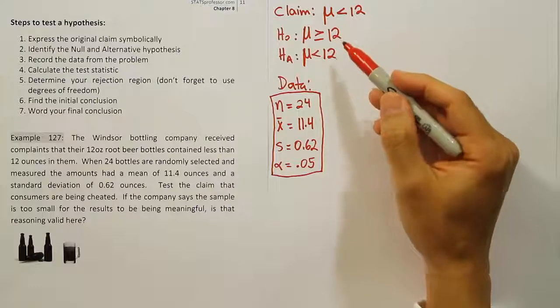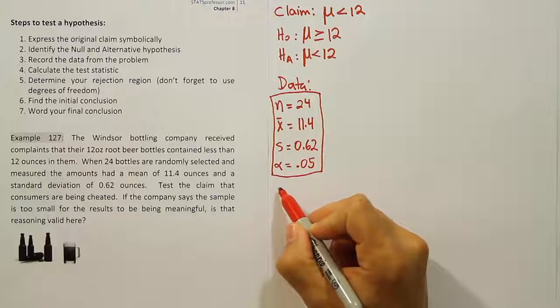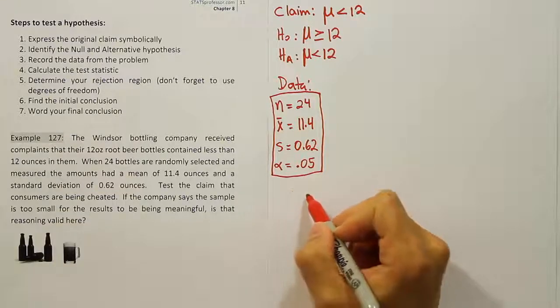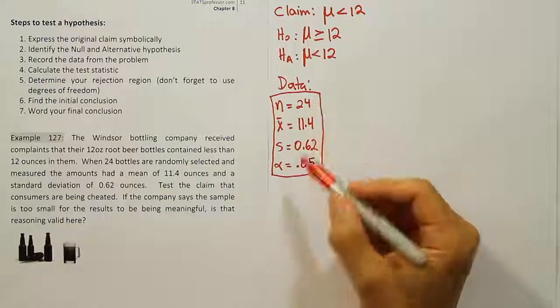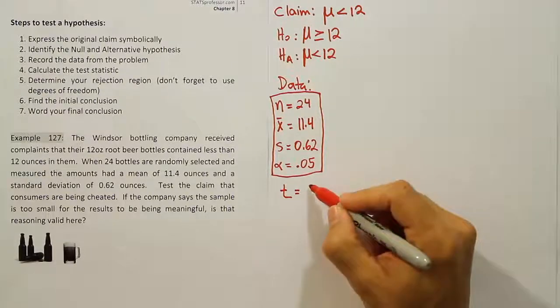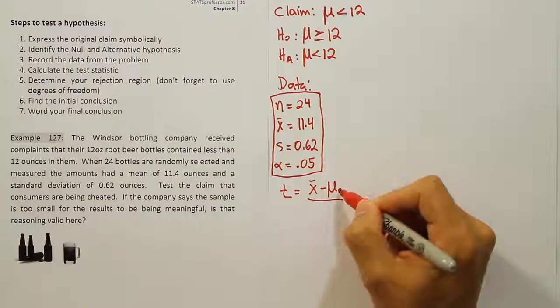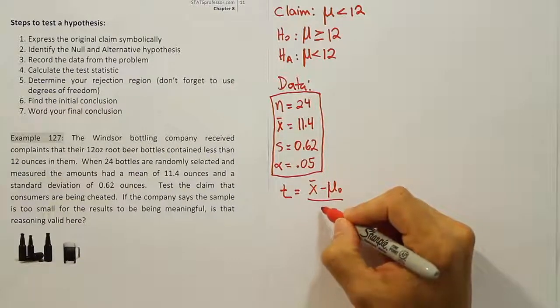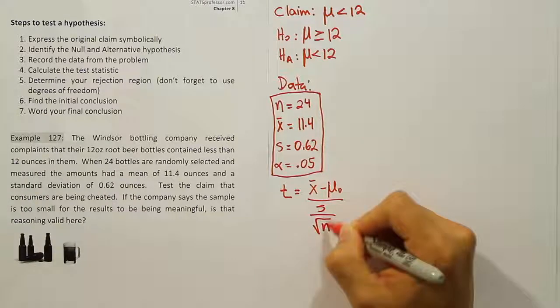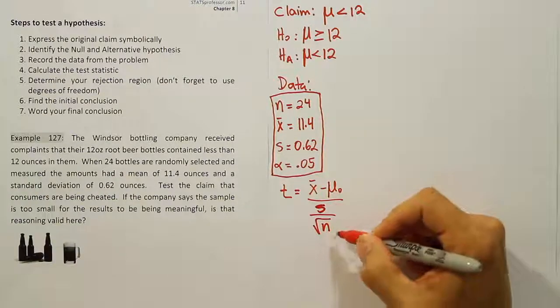So we have the claim, we have H₀, we have Hₐ, we have the data. Our next step is the test stat. Now we would normally use z as our test stat, but here our sample size is small. So we're going to go ahead and use t as our test stat. The rest of the formula is basically the same. It's the sample mean minus the value from H₀. Then we'll have s over the square root of n.